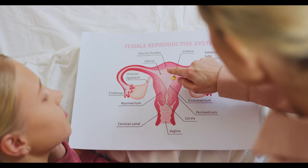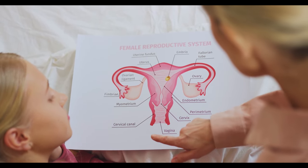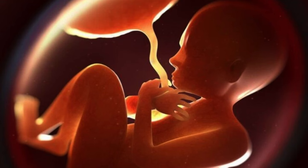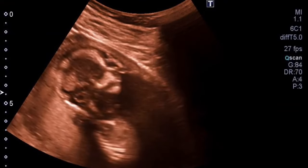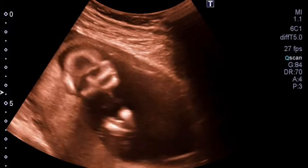After ovulation and fertilization in the fallopian tube, the inner layer of the womb, called the endometrium, develops further and becomes thicker to provide all the nutrients, temperature, and space the baby needs in the 9 months of living in the womb. Although the baby is called an embryo in the first 8 weeks and a fetus after 9 weeks till delivery at 40 weeks, we will use the term 'baby' for both for ease of understanding.